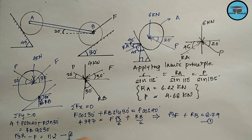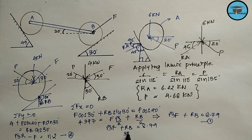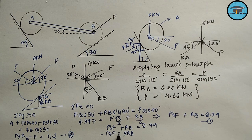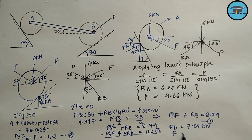Solving equations one and two — √3 F plus R_B equals 8.79 and √3 R_B minus F equals 11.2 — by multiplying equation two by √3 and adding, we get 3 R_B minus √3 F equals 11.2√3. Solving these simultaneously gives R_B as 7.04 kN and F as 10.07 kN.